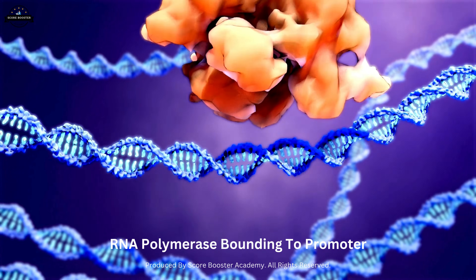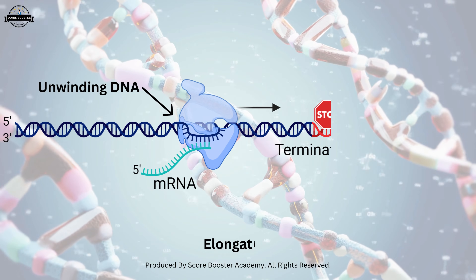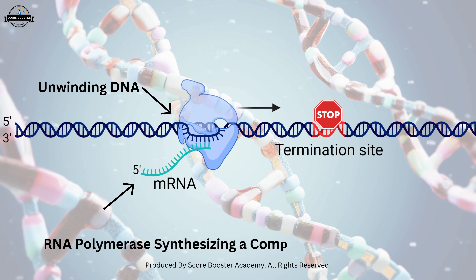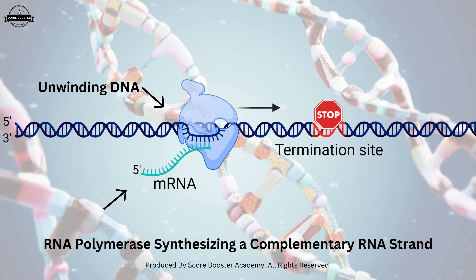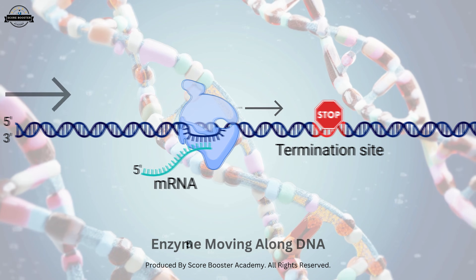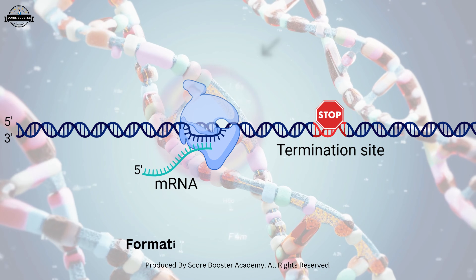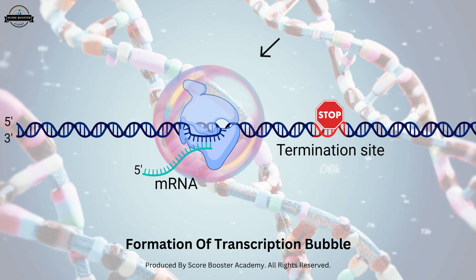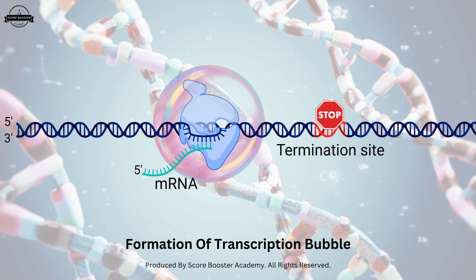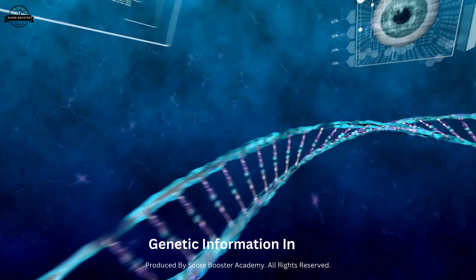Once RNA polymerase is bound to the promoter, the elongation phase begins. During elongation, RNA polymerase unwinds the DNA double helix and synthesizes a complementary RNA strand using one of the DNA strands as a template. The enzyme moves along the DNA, adding ribonucleotides to the growing RNA chain in a 5' to 3' direction. A notable aspect of elongation is the formation of a transcription bubble, a region where the DNA is temporarily unwound, allowing the RNA polymerase to read the template strand. This process ensures that the genetic information encoded in the DNA is accurately transcribed into RNA.